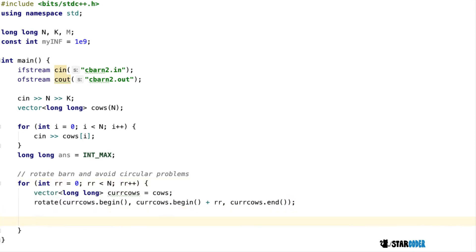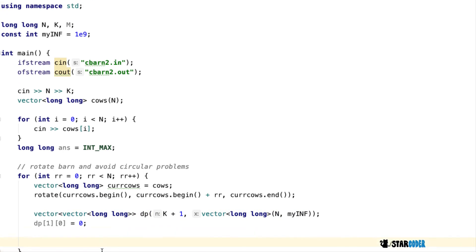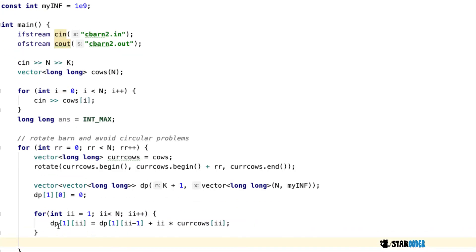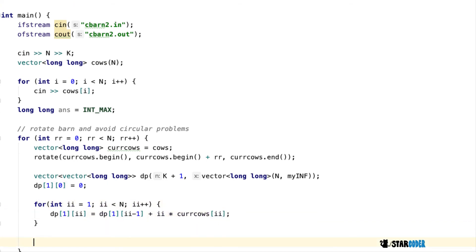For each rotation, we create a 2D DP array and initialize it, where the first dimension is K and the second dimension is our current location. While initializing, we update the value for DP[1] by looping through all the different values.